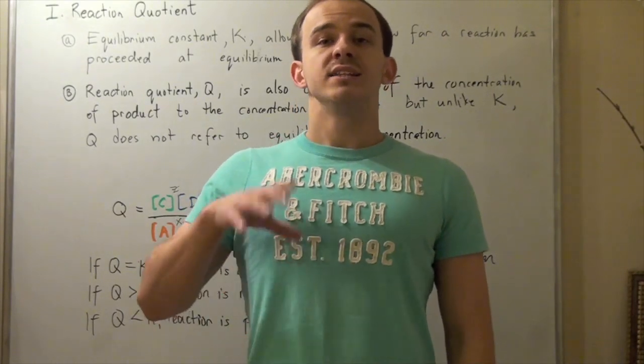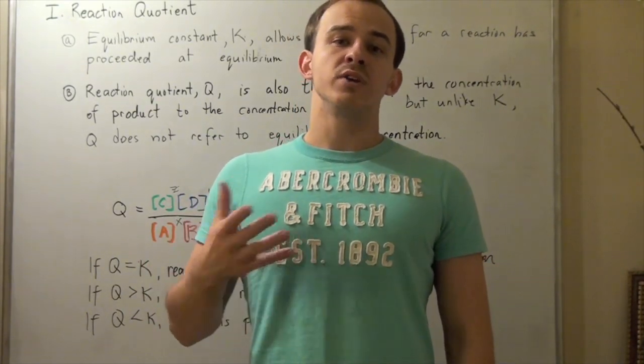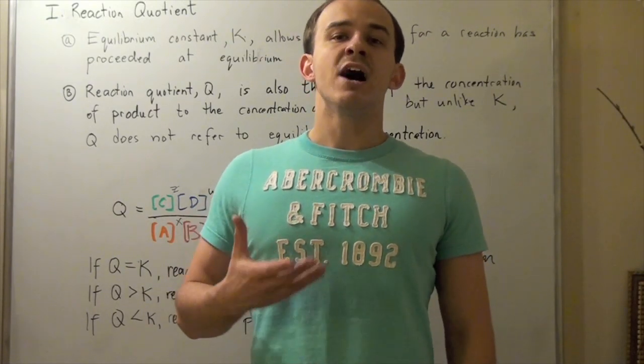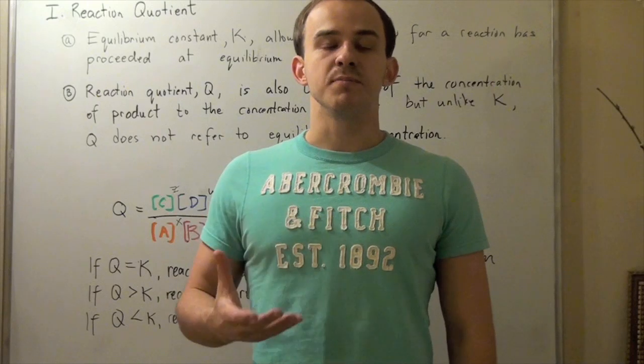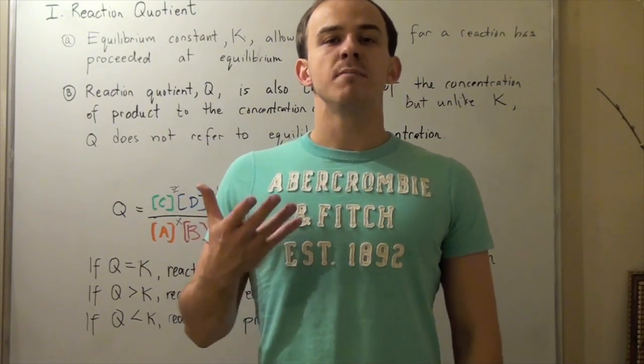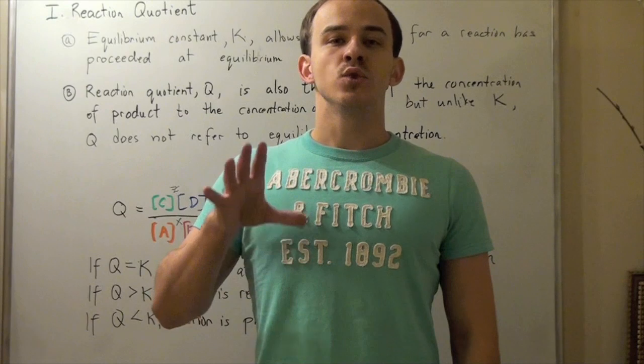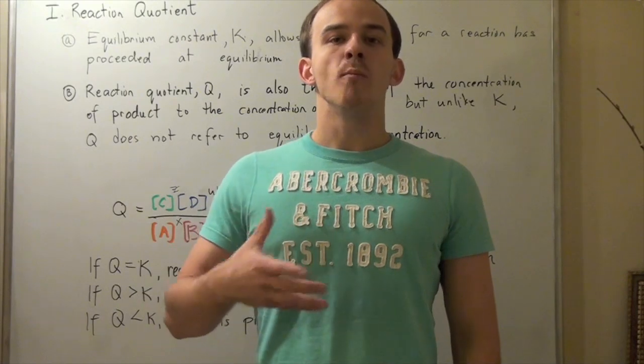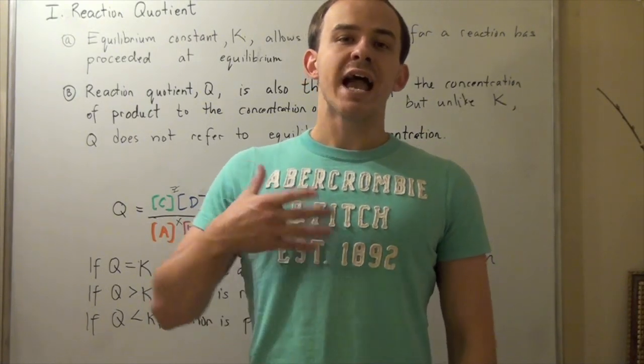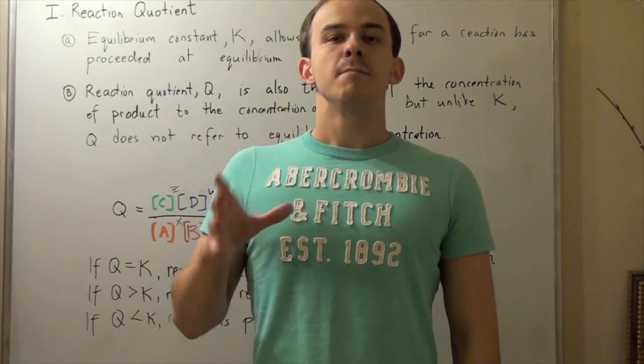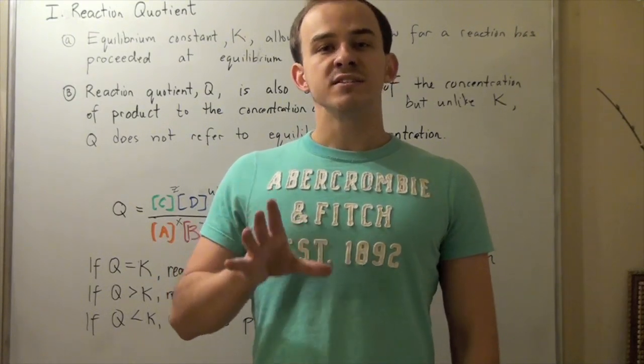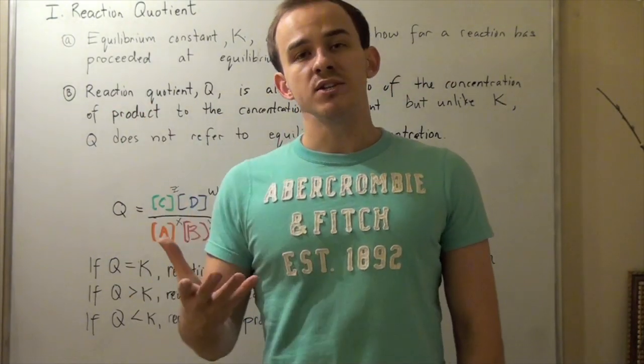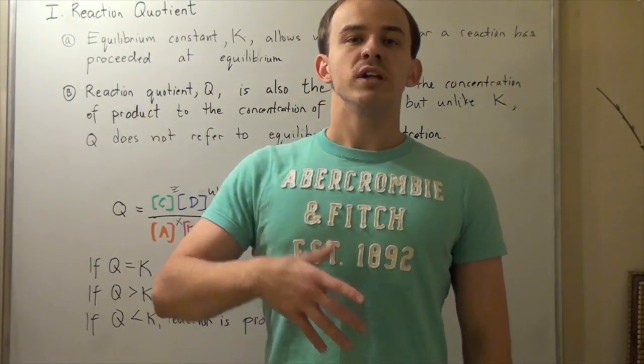So far, we have spoken about the equilibrium constant of our reactions. We said that the equilibrium constant K allows us to see how far our reaction proceeded at equilibrium. In other words, it only gives us information about our reaction at equilibrium, when equilibrium is established. It would be nice if we could somehow know more information about our reaction before equilibrium is actually established. And this is exactly what the reaction quotient does - it provides us more information about our reaction before equilibrium is established.